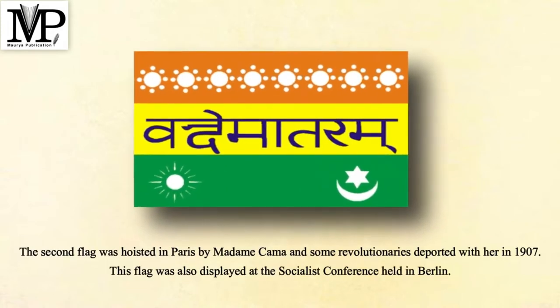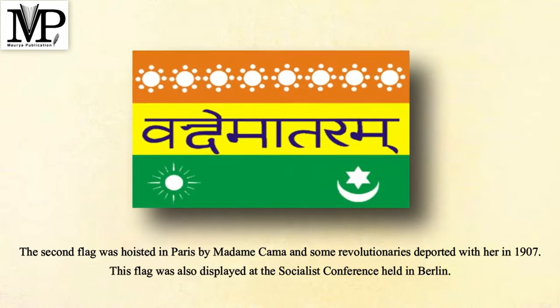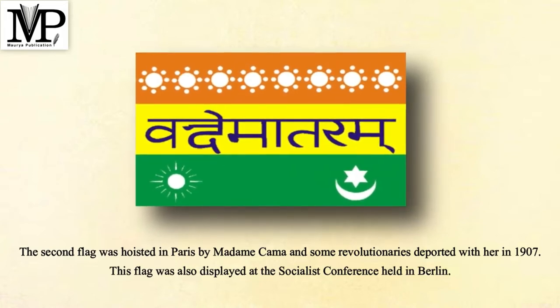The second flag was hoisted in Paris by Madame Kama and some revolutionaries deported with her in 1907. This flag was also displayed at the Socialist Conference held in Berlin.